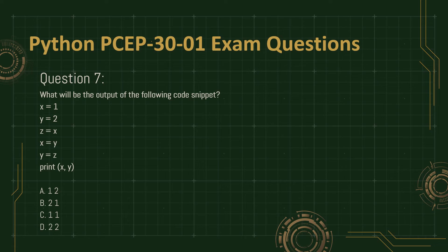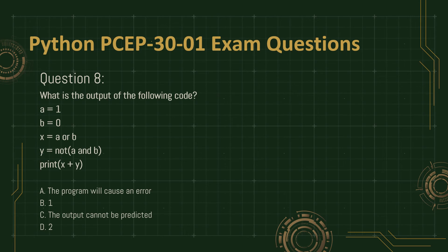Question 7. What will be the output of the following code snippet? x equals 1, y equals 2, z equals x, x equals y, y equals z. Print x, y. A. 1, 2. B. 2, 1. C. 1, 1. D. 2, 2.